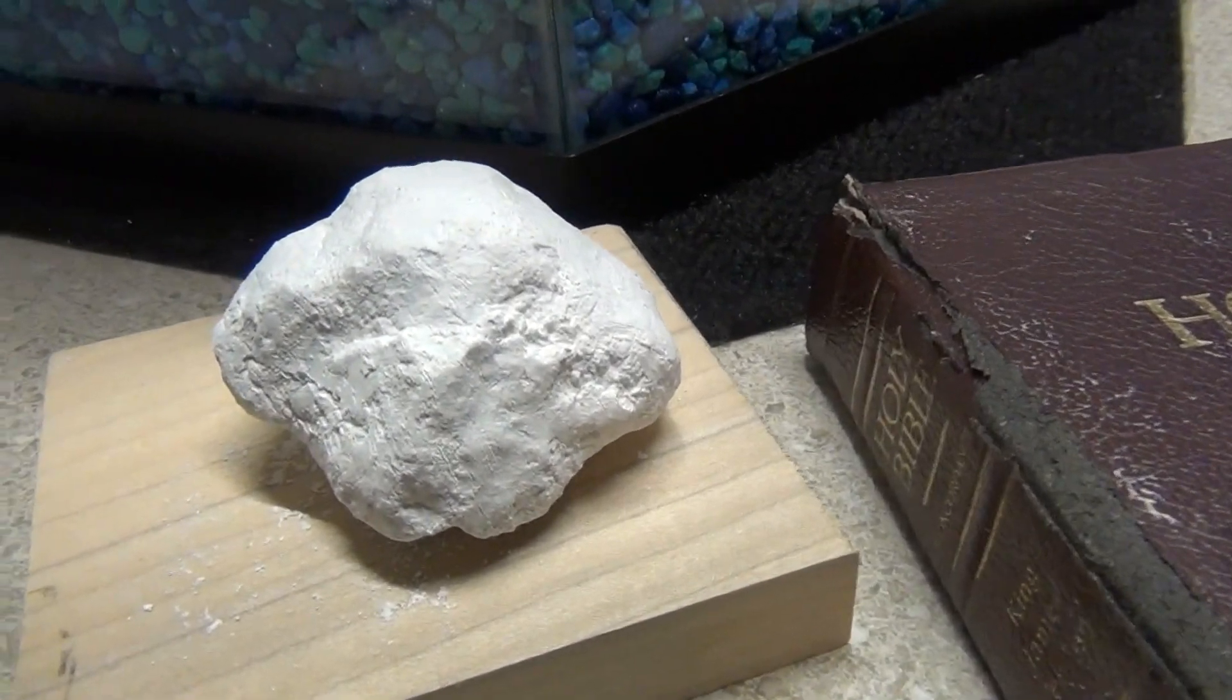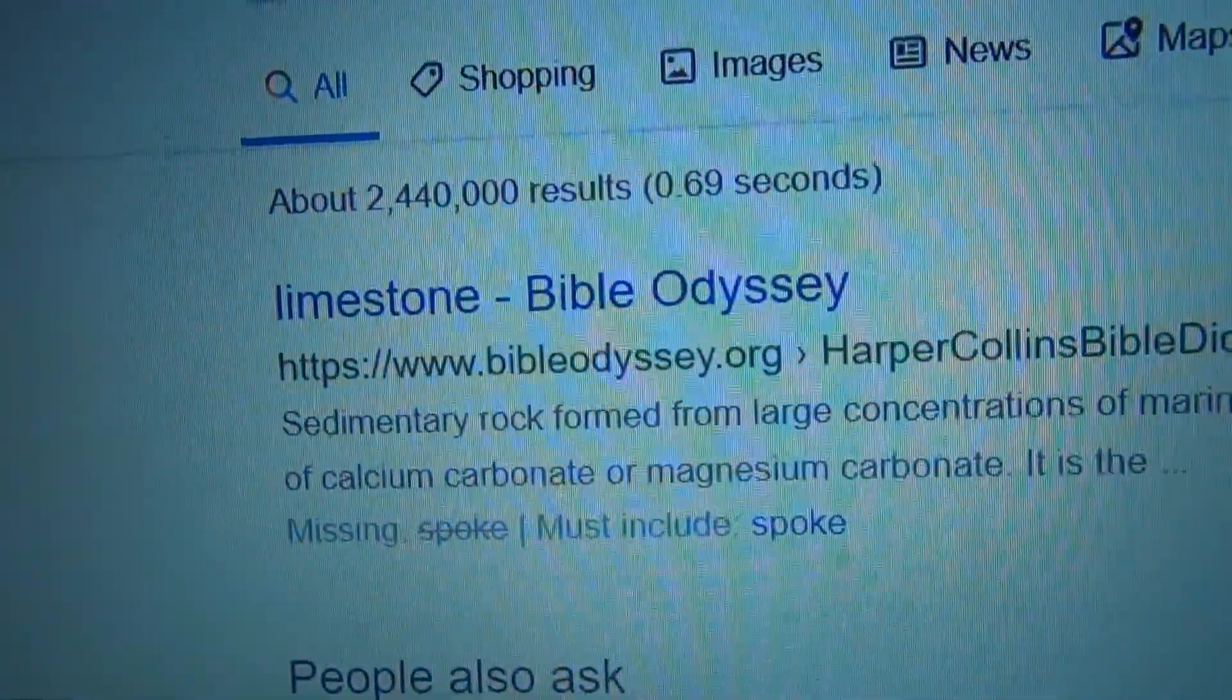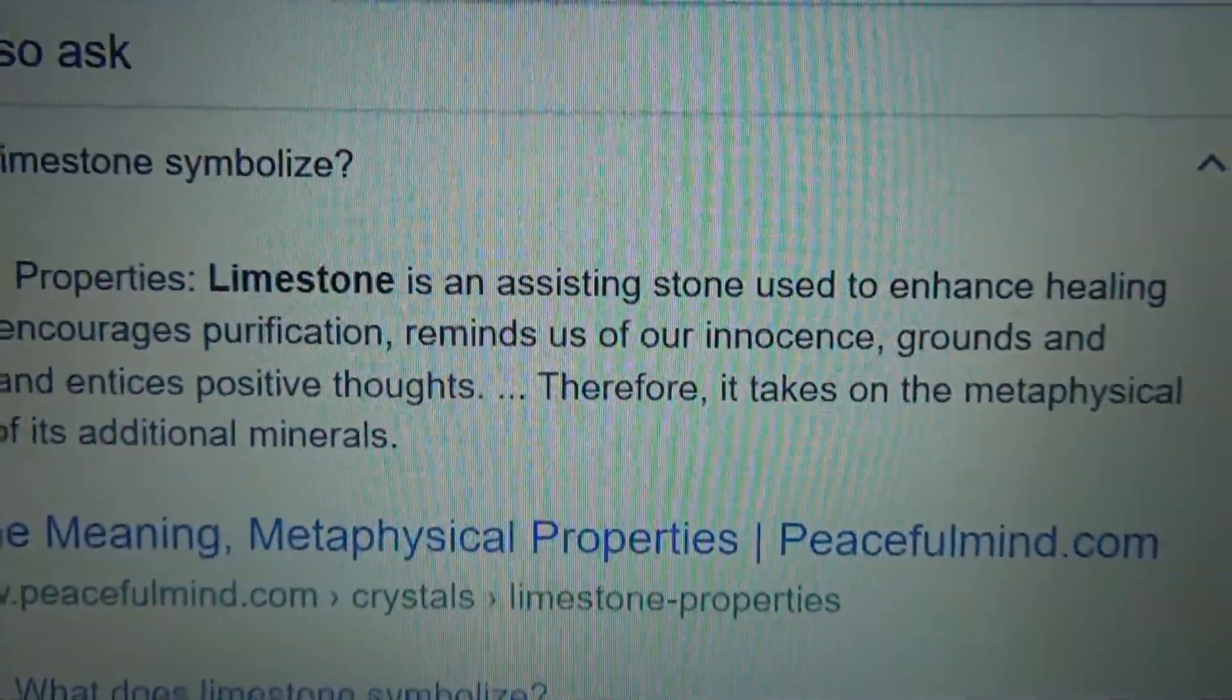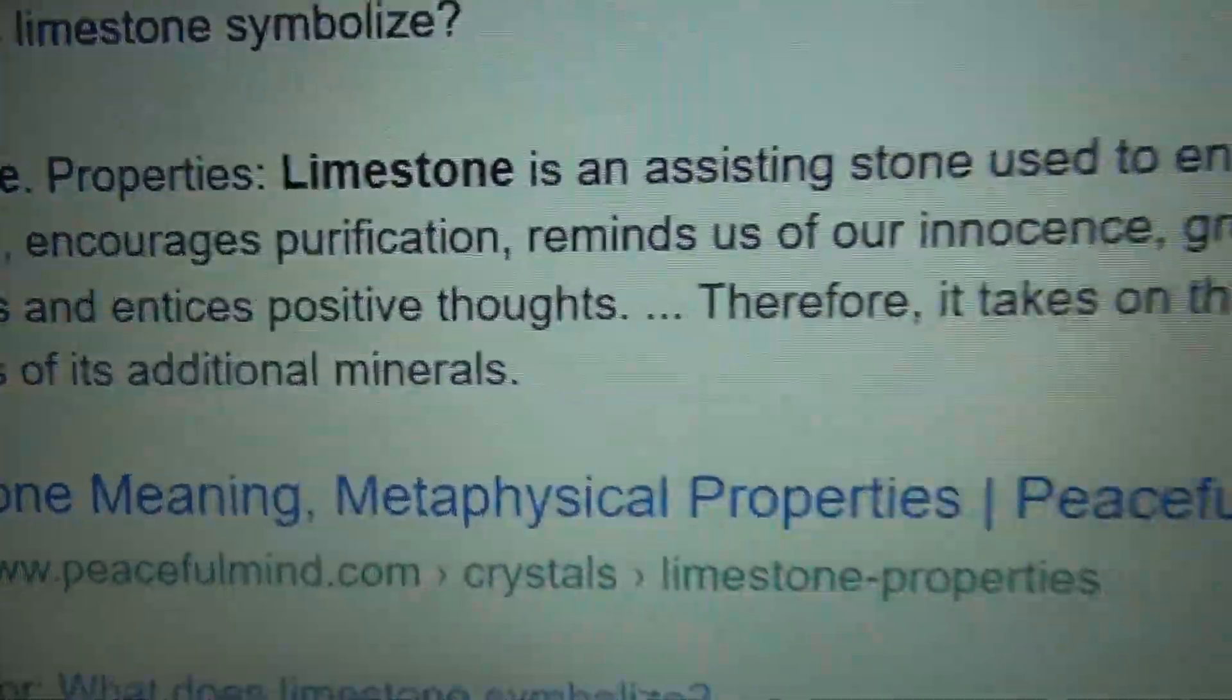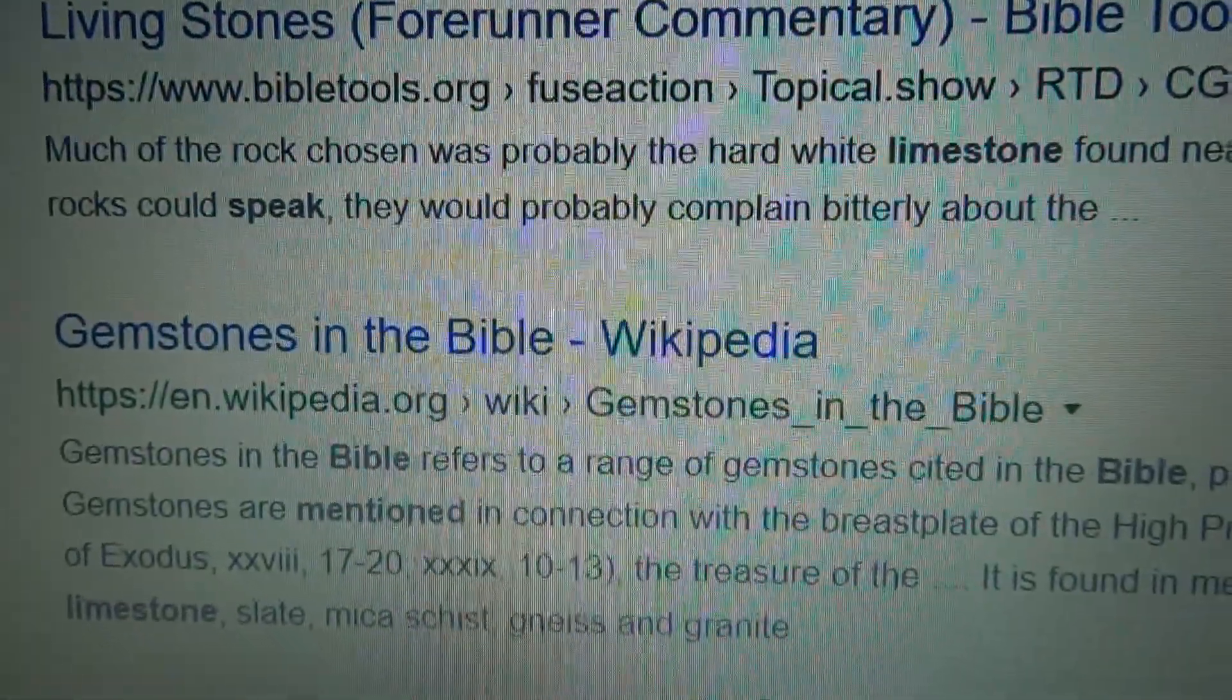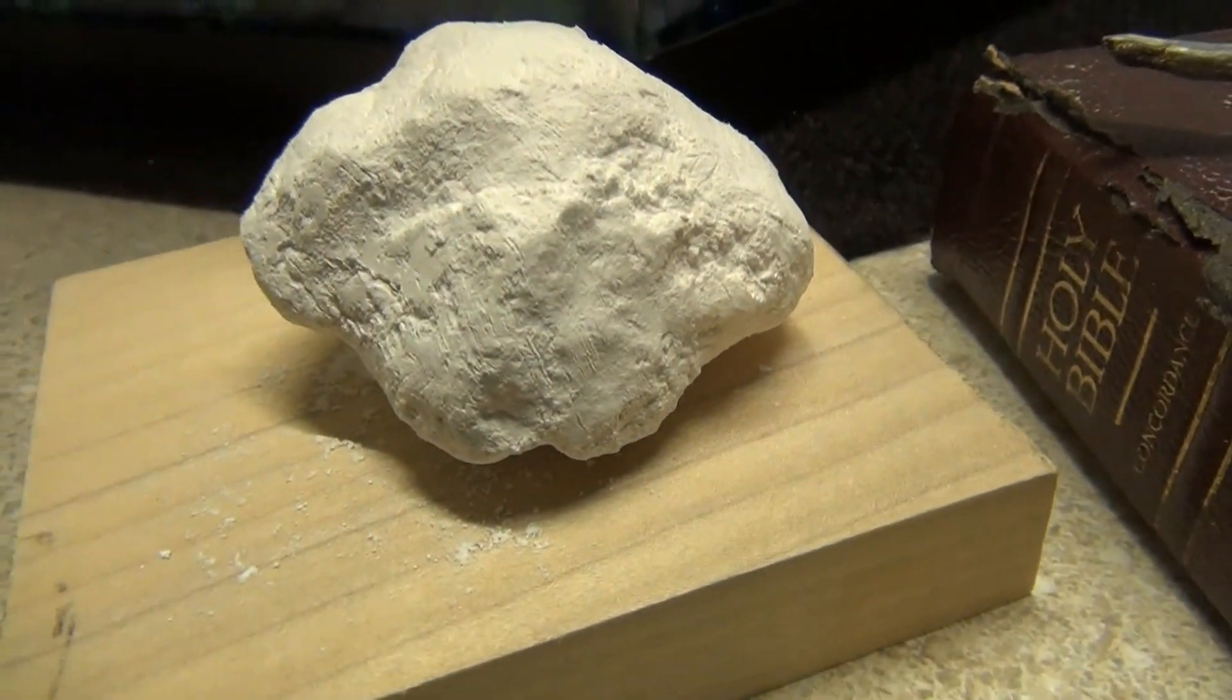This stone right here has metaphysical properties. It's in the Bible, it's ancient stone written in our history, it's used with alien technology. Go look for yourself, go on Google and check out limestone, and look at what it symbolizes. Limestone is an assisting stone, used in the healing properties to encourage purification, reminds us of our innocence, grounds and centers us, and entices positive thoughts. So it does affect you physically and metaphysically. It's incredible if you go and look and read some of the history about this simple stone, and how it's changed everything on the planet. In construction, building, and in my life personally.